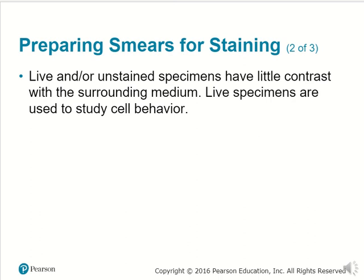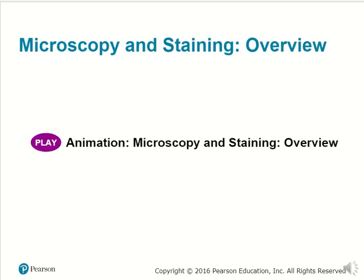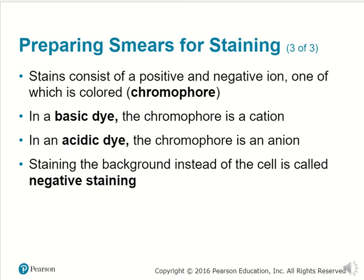Typically live or unstained specimens have very little contrast with the surrounding medium, so you're not going to be able to tell one part of the specimen from another. Live specimens are needed for observing the actual behavior of that specimen. Stains can involve a positive or negative ion, typically a colored molecule called a chromophore. In a basic dye, the chromophore is going to be a positive cation. For acidic dye, the coloring agent is going to be a negative ion, called an anion.